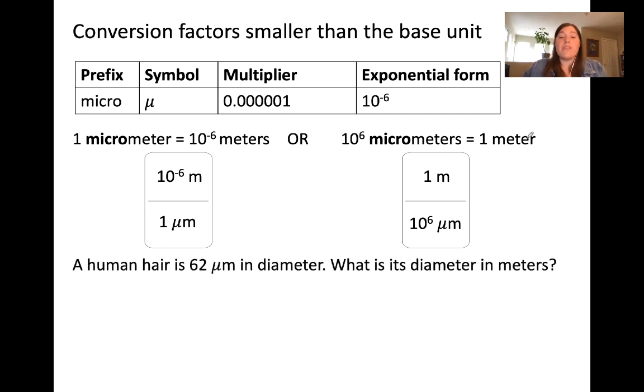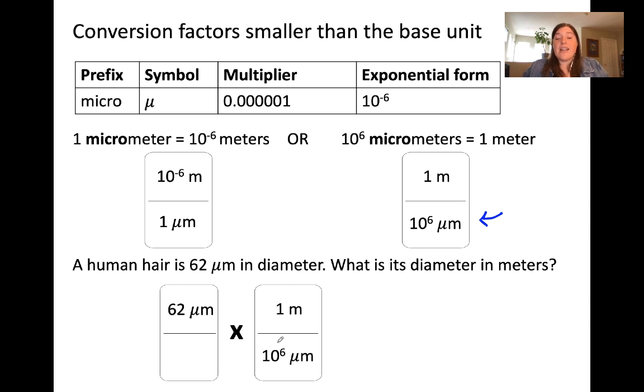Let's solve a problem where we convert 62 micrometers to meters. We take our given information with the unit, and we know that we need micrometers on the bottom in the denominator to cancel the micrometers in the numerator. I'm going to use the conversion factor on the right. There are 10 to the 6 micrometers in 1 meter. Micrometers cancels, and then we should be left with our unit of meters.